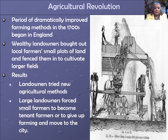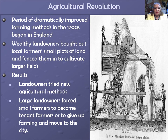The enclosure movement began with these farmers, and it had two important results. First, landowners tried new agricultural methods. Second, large landowners forced small farmers to become tenant farmers or to give up farming and move to the cities. After buying up the land of the village farmers, these wealthy landowners enclosed their lands with fences and hedges. This increase in land holdings enabled them to cultivate larger fields called enclosures, where they experimented with more productive seeding and harvesting methods to boost crop yields.